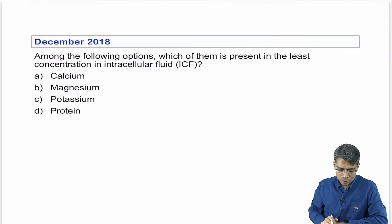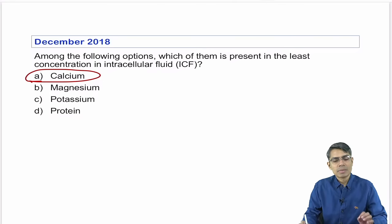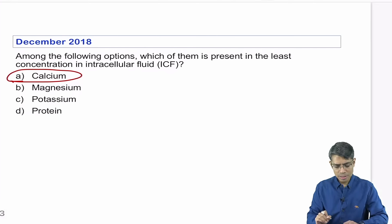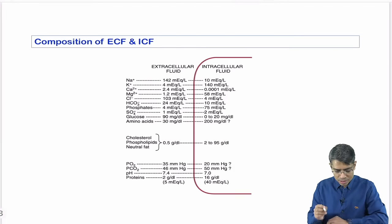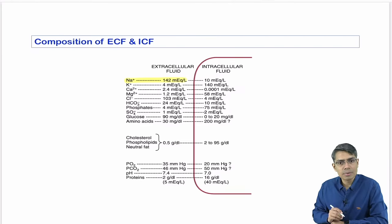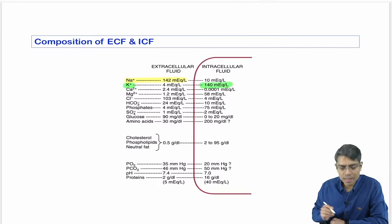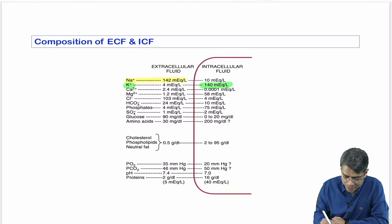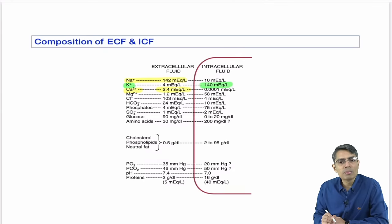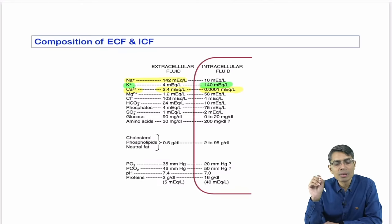Next question: which of the following is present in least concentration in the intracellular fluid? The answer is calcium. Maximum is potassium, but calcium concentration is very, very high in the extracellular fluid and very, very low in the intracellular fluid — 2.4 mEq/L extracellularly versus 0.0001 mEq/L intracellularly.